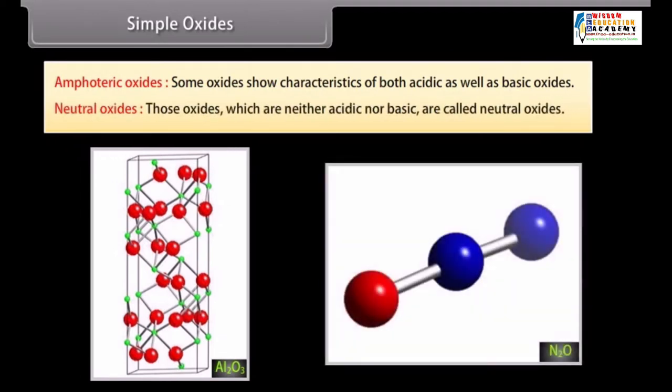Neutral oxides. Those oxides which are neither acidic nor basic are called neutral oxides. For example, CO, NO, N2O and H2O.